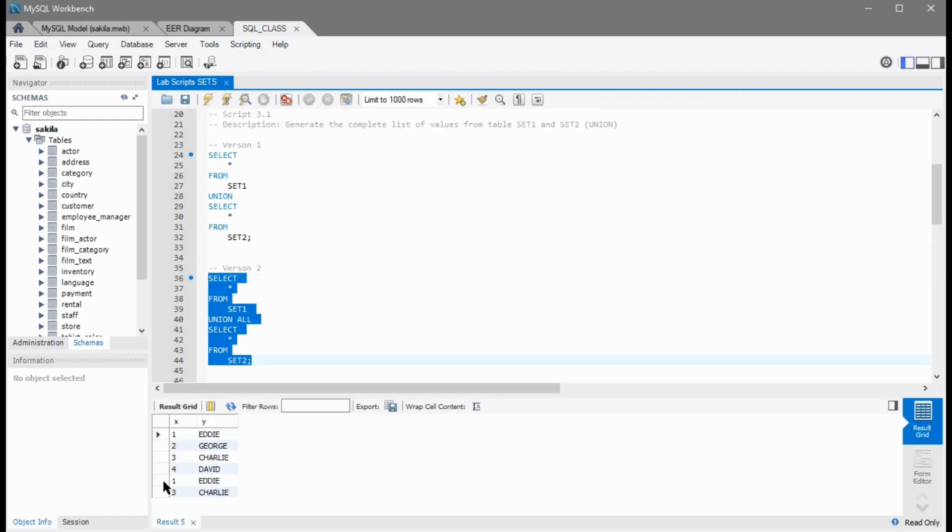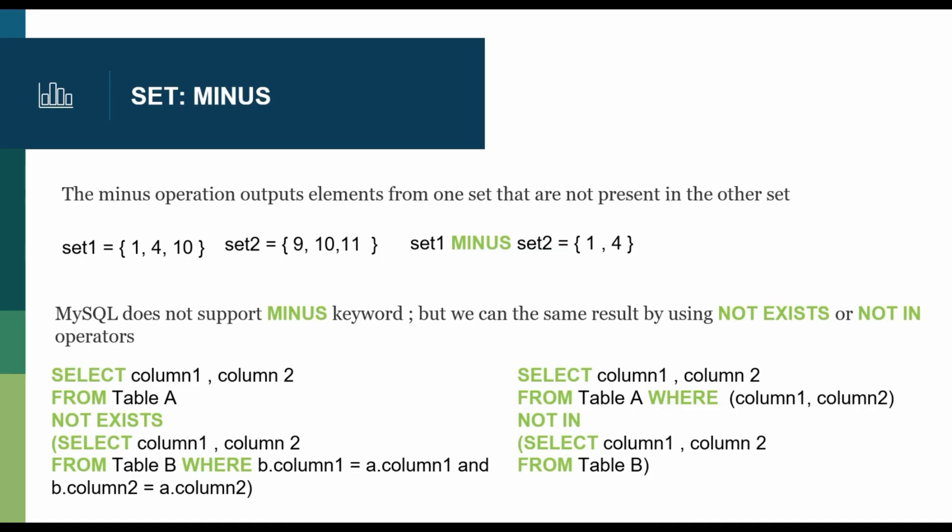The third type of set operation is minus. Basically, set1 minus set2 will give you elements that are in set1 but not in set2. If you look at the example on the slide, set1 has one, four, ten data elements and set2 has nine, ten, eleven. If you do the minus operation there, you will get one and four as a result, just as a mathematical operation of subtraction. MySQL does not support minus keyword, but we will still achieve the same results by using not exists or not in.